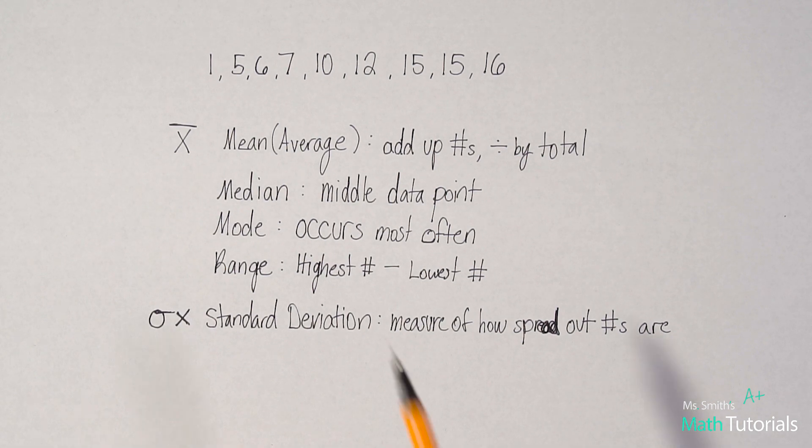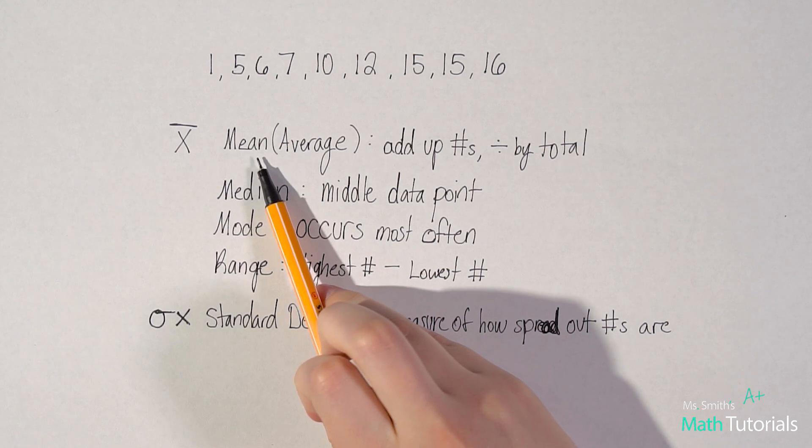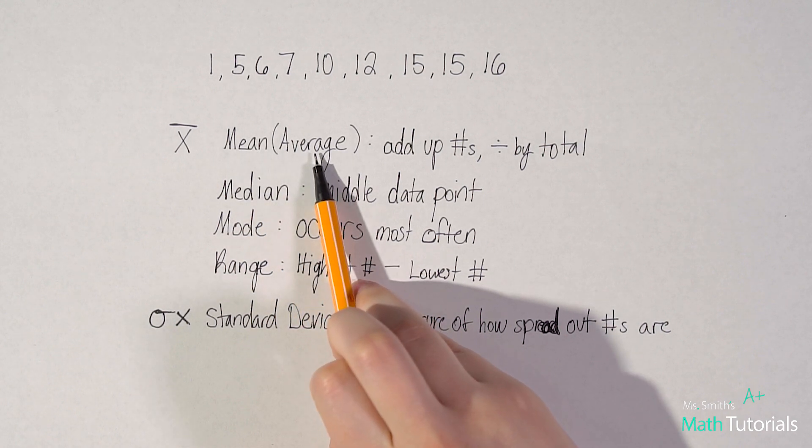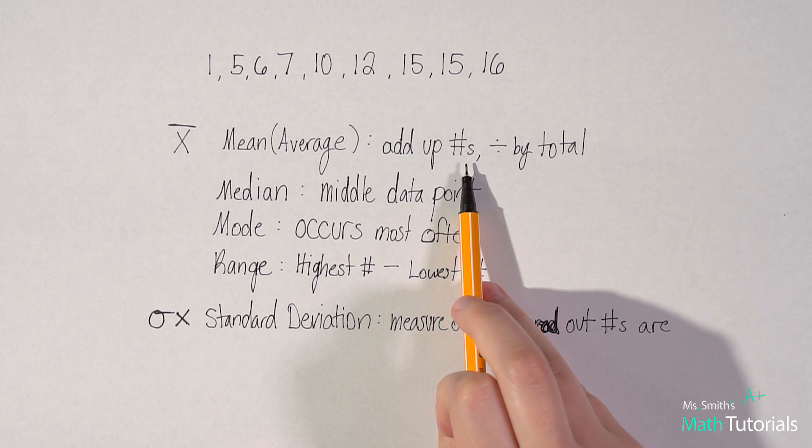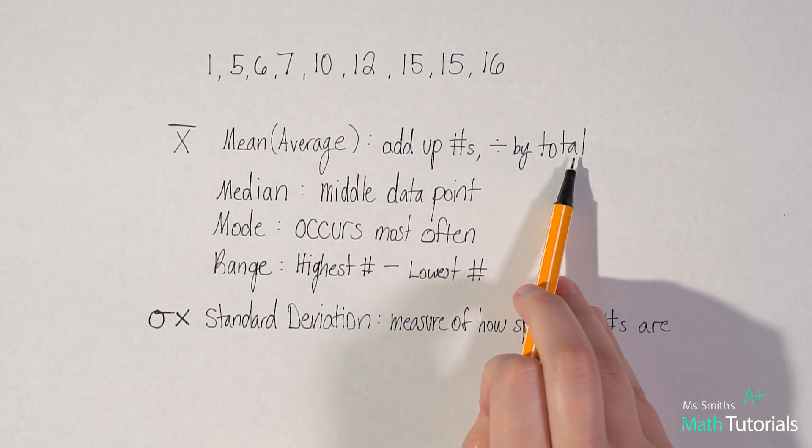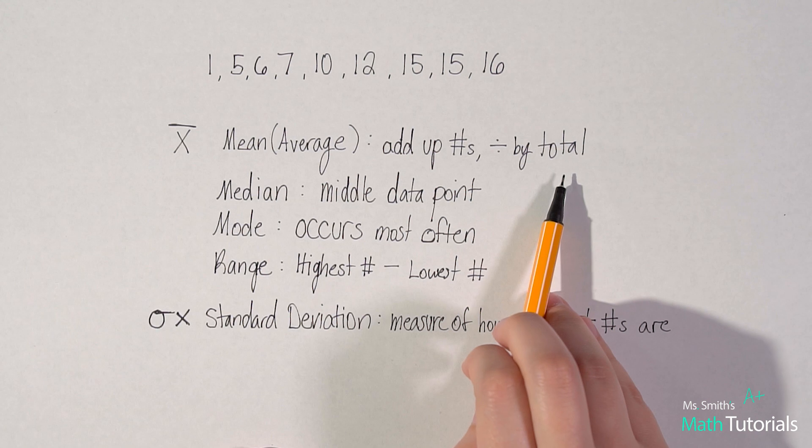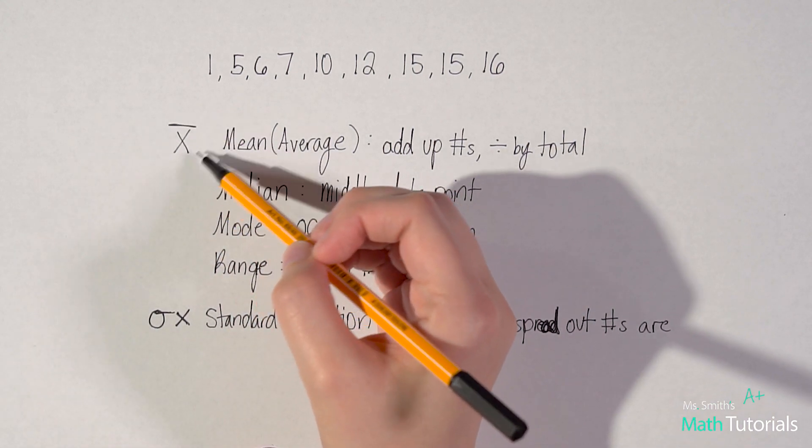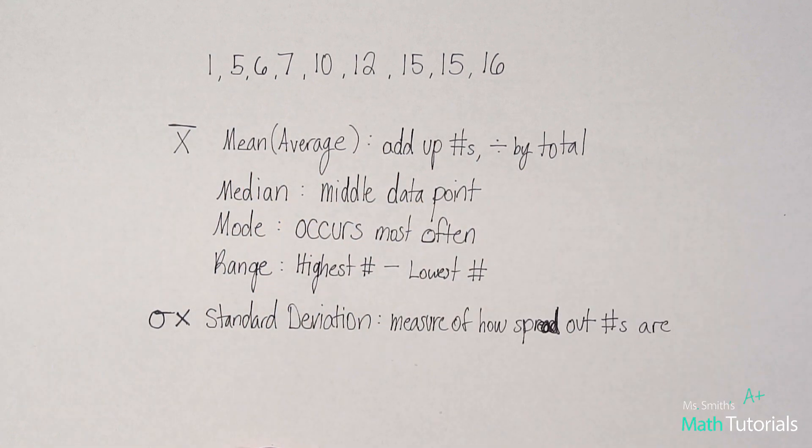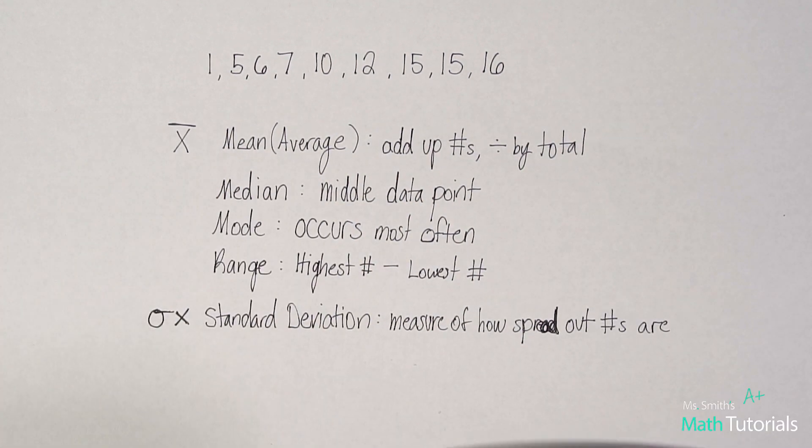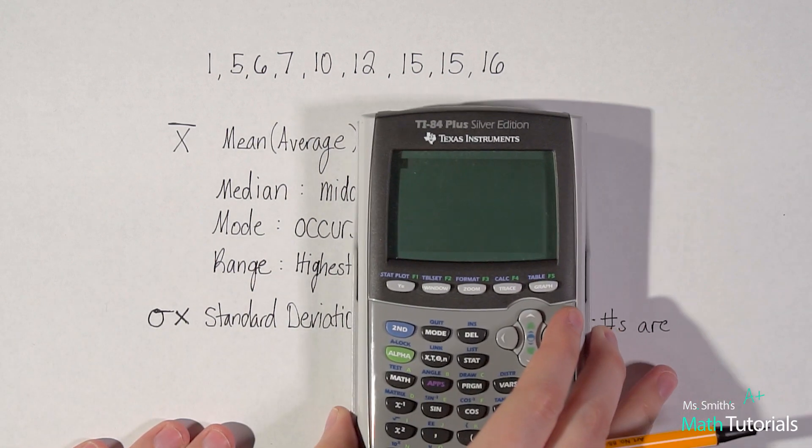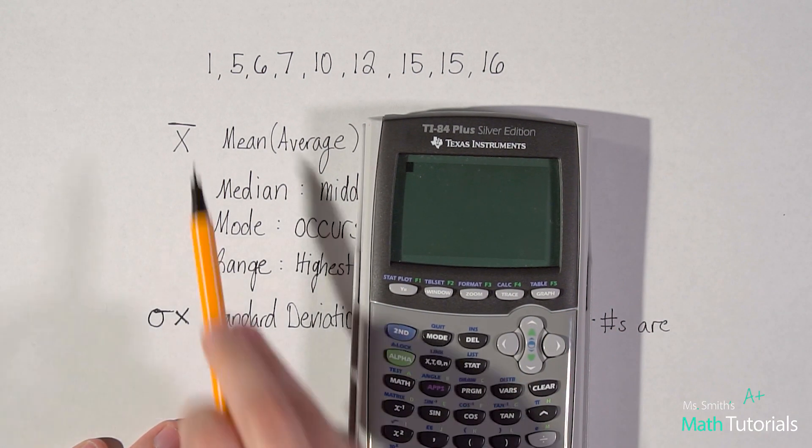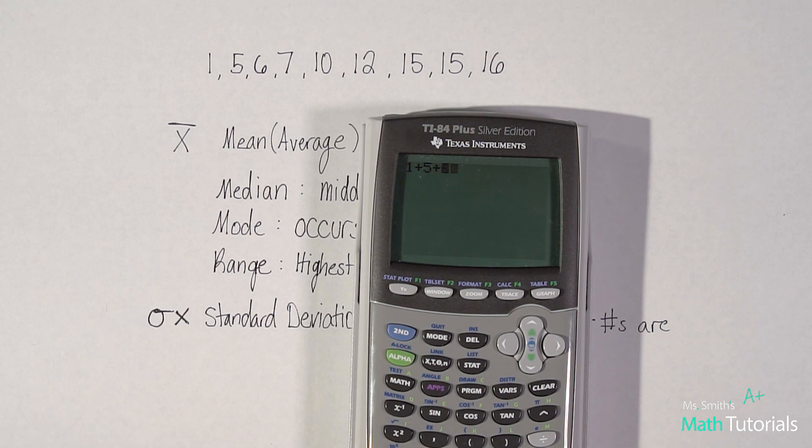The first term, and most of the students recognize this one immediately. So being able to find the mean or also known as the average of a data set. Now to find the average of a data set, you add up all the numbers, and then you divide by the total amount of numbers. Okay, so and the mean is signified with that symbol. So it's like an x with a line over it. Okay, so you'll need to be able to identify that in the future that that means mean. So let's go ahead, let's add up all of this data set. So let's see, I've got one plus five plus six plus seven plus 10 plus 12 plus 15 plus 15 plus 16.